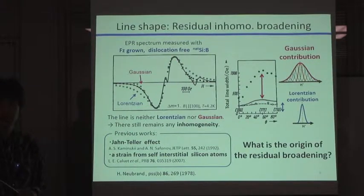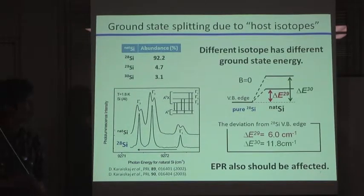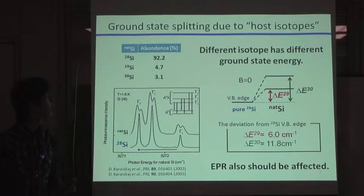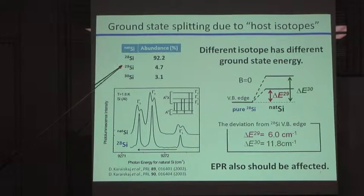To think about this question, we found similar phenomena in the field of photoluminescence study. The effect is called as ground state splitting due to host isotopes. As you know, natural silicon is composed of three stable isotopes, 28-silicon, 29-silicon, and 30-silicon.